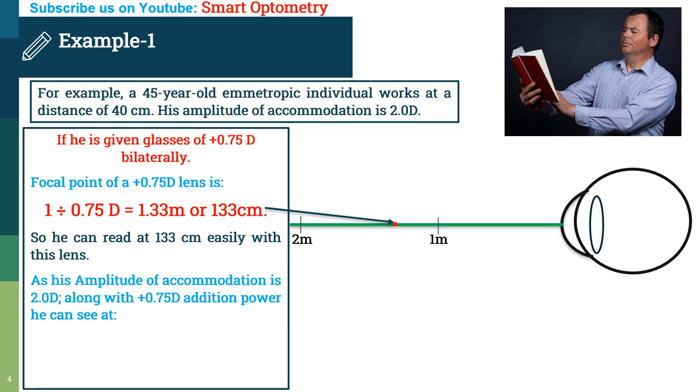Now, as his amplitude of accommodation is 2 diopter, so along with plus 0.75 addition power, he can see at 1 divided by 2 plus 0.75. Here, 2 is amplitude of the patient and 0.75 is the addition lens for presbyopic patient. Or 1 divided by 2.75 equal to 0.36 meter or 33 cm.